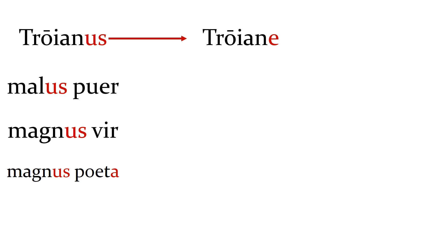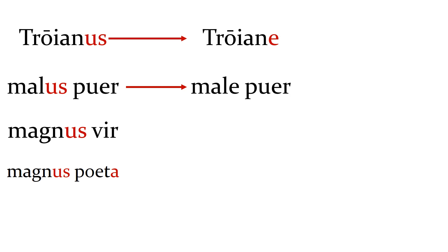If you want to speak to a bad boy, a malus puer, you would call him male puer, because malus has a vocative case. Puer has no ending, so it stays that way. Magnus vir is a great man. If you want to speak to him and say, oh great man, you would say magne vir.